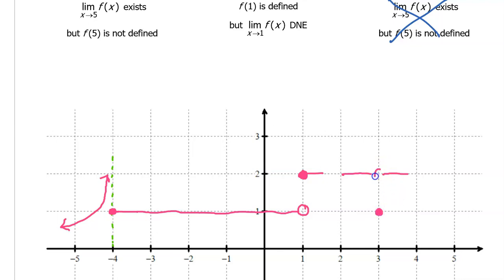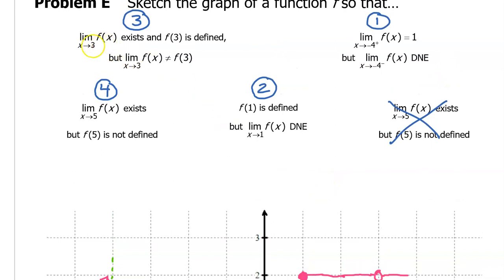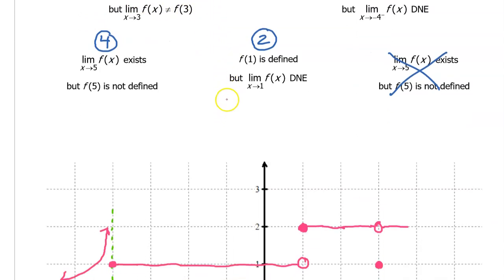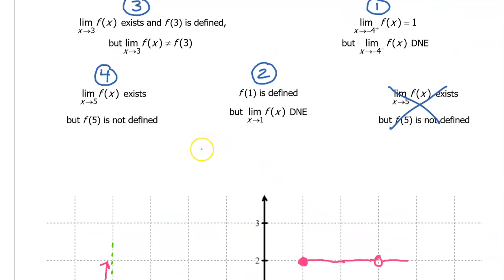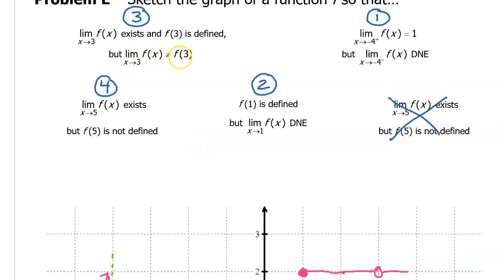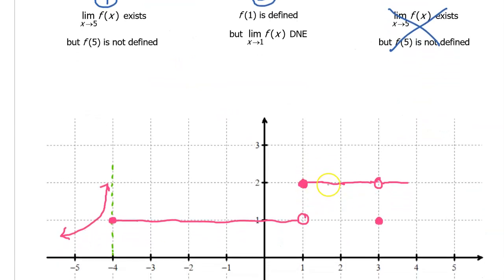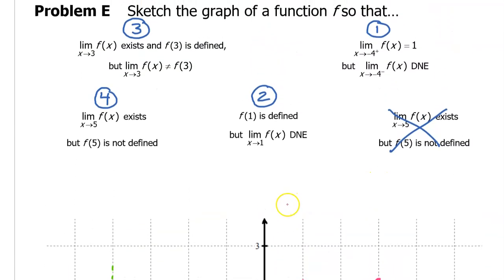I'll put an open circle here and connect this with what we had before. Let's double check: the limit as x approaches 3 exists — we approach the same value from left and right. And f at 3 is defined, with the value of the function at 3 equal to 1. The limit as x approaches 3 is 2, while the value of the function at 3 is 1, so the limit and value are not equal. Condition 3 is satisfied.